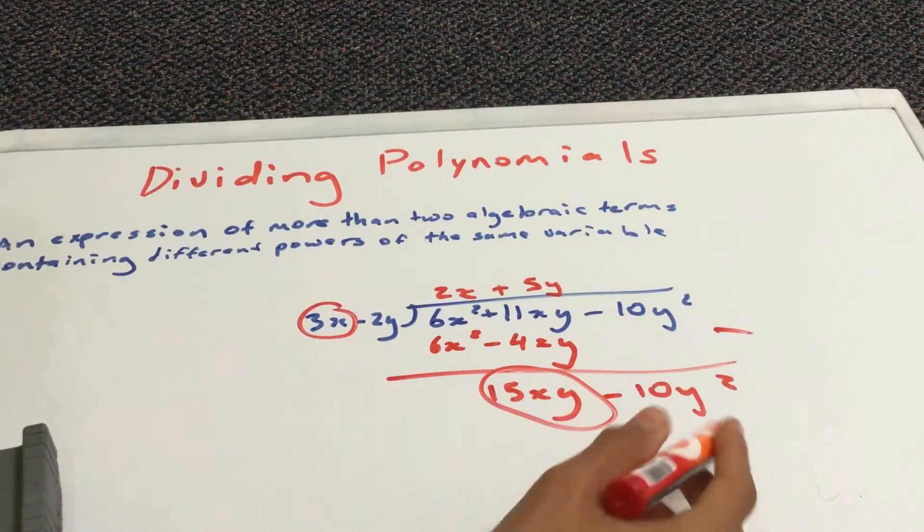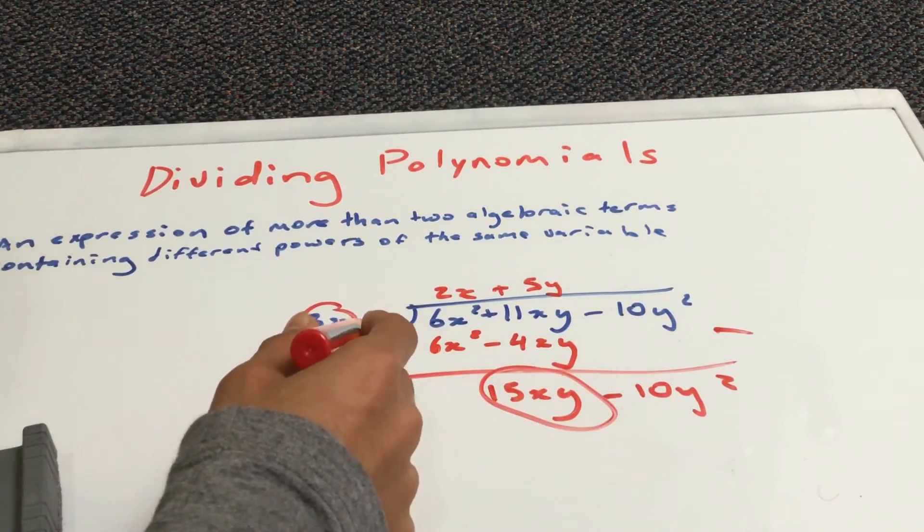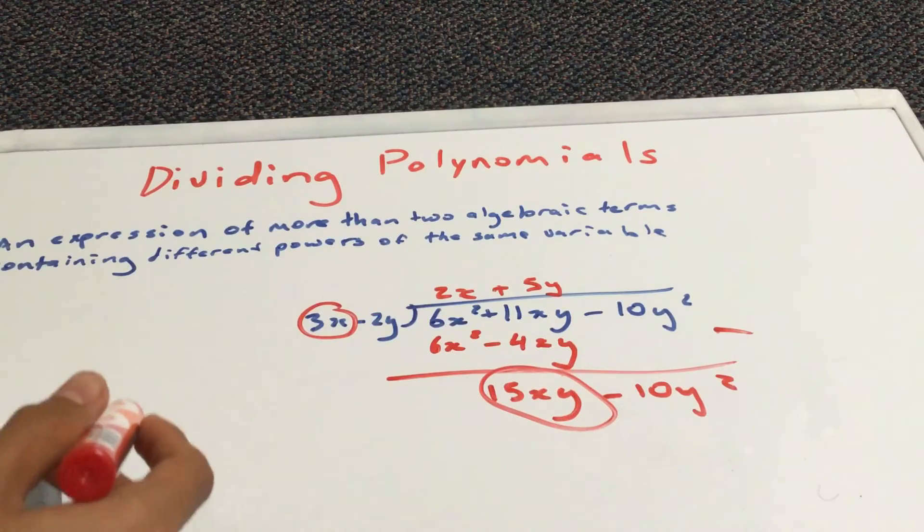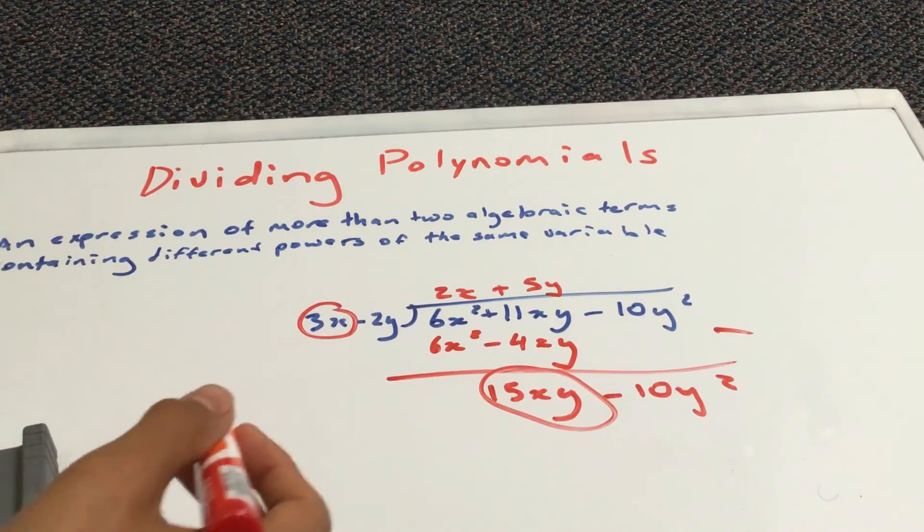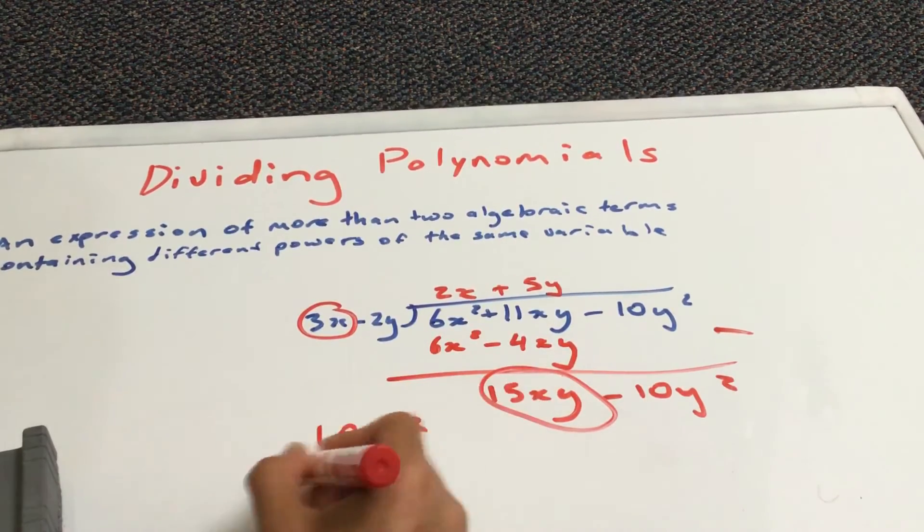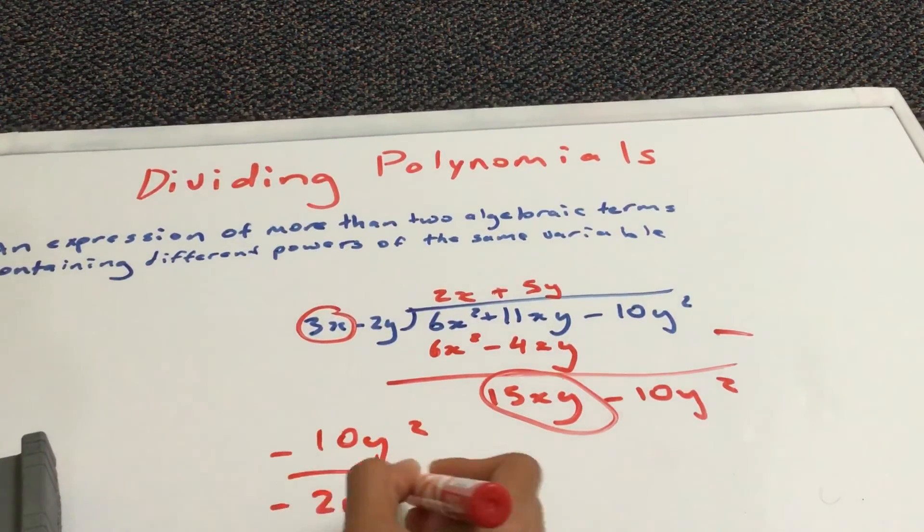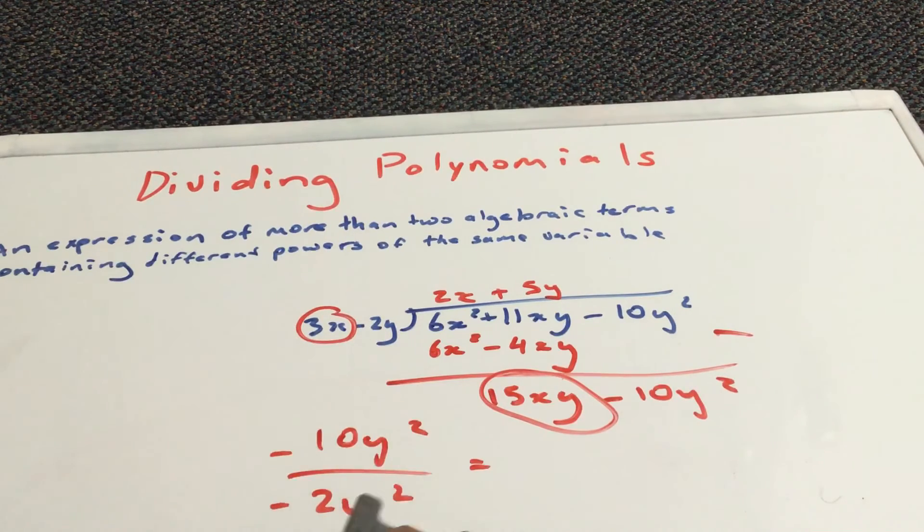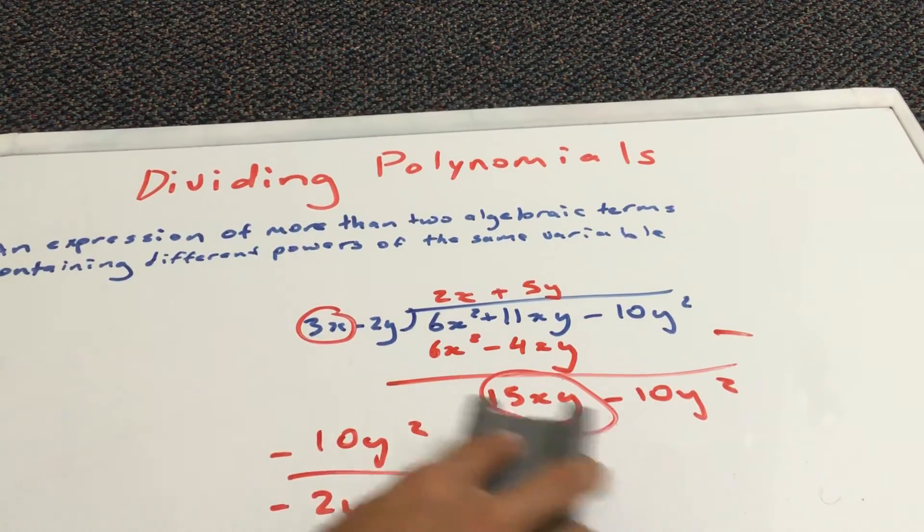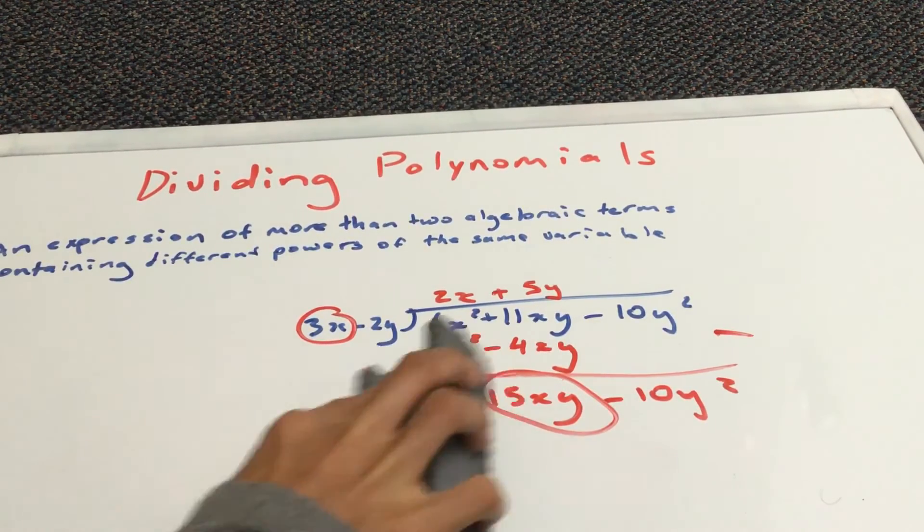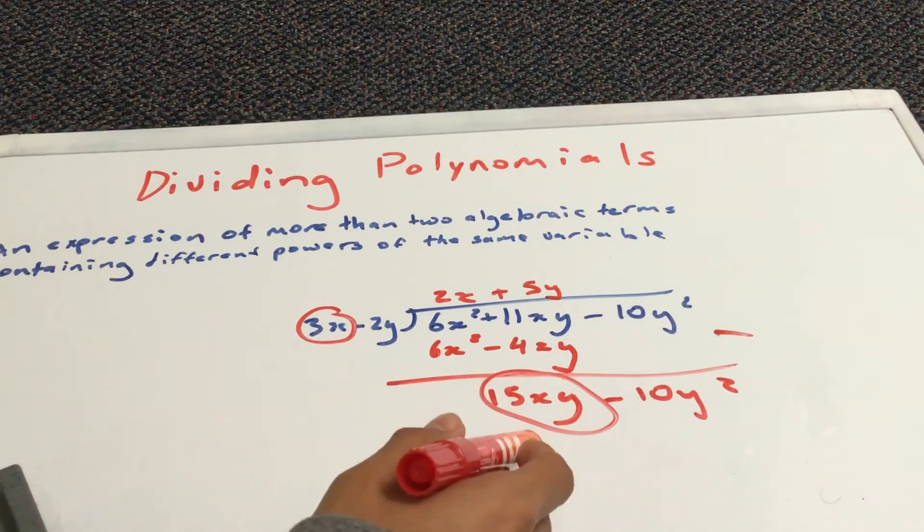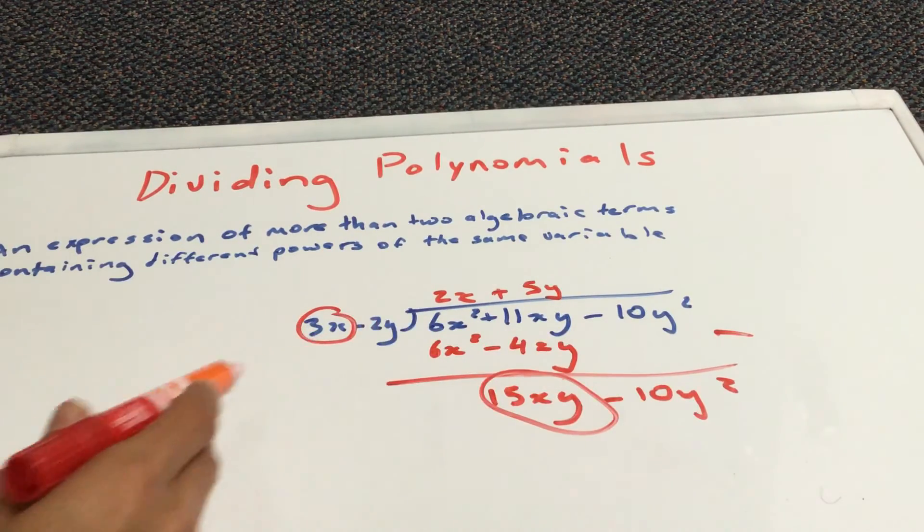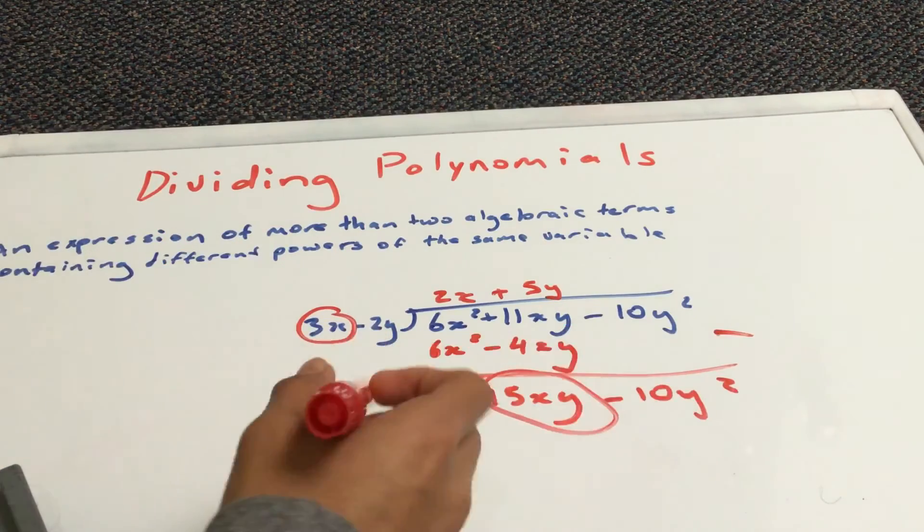So, now, in this case, when you do minus 10y squared divided by 2y, it's not needed because we've already done 15xy divided by 3x. And, this part cannot be divided by the first part. So, we leave it like this.